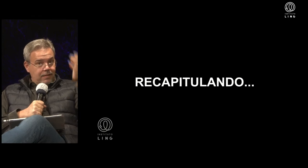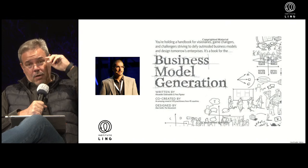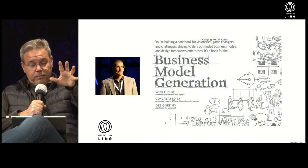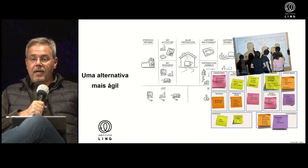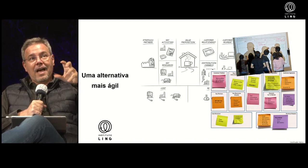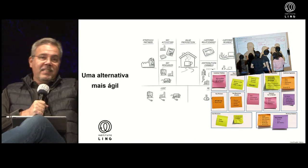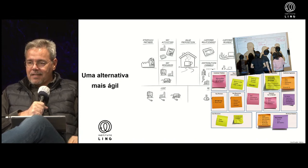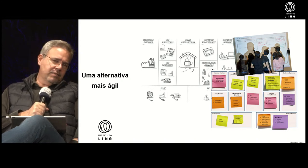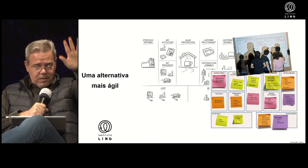Recapitulando: na aula passada falamos do conceito de Alexander Osterwalder e Yves Pigner, que criaram o Business Model Generation — baseado em nove espaços de áreas estratégicas a serem preenchidas colaborativamente no Business Model Canvas. Coloca numa parede em casa, compra post-its, bons hidrocores, convida os amigos e pensa num negócio legal na área criativa para impulsionar suas vendas e viver daquilo que você gosta de fazer. Temos 13 segmentos na indústria criativa.